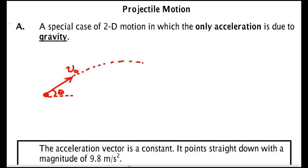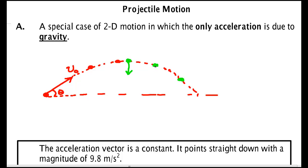This ball will follow a parabolic path, and at each point along this path — any point along there — the acceleration is downward and is constant, with a value of 9.8 meters per second squared. So at every point the acceleration vector points downward along that curve.